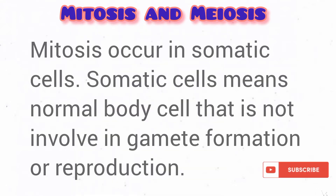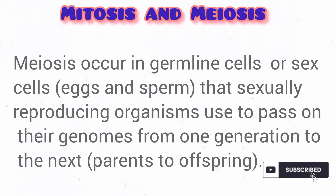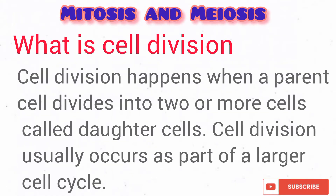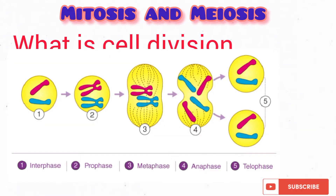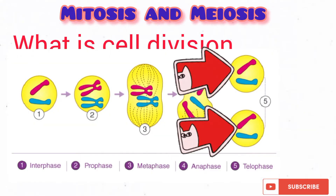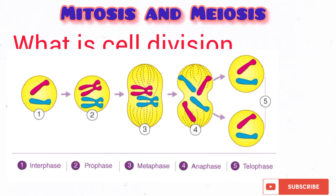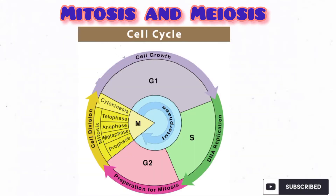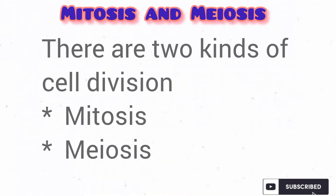Mitosis is the normal cell division that occurs in our somatic, or body, cells and is responsible for growth and worn-out tissue repair. Meiosis is the kind of cell division responsible for gamete production. Cell division occurs when the parent cell divides into two or more cells called daughter cells. As you can see from the diagram, cell division is part of the cell cycle, and we have two types: mitosis and meiosis.